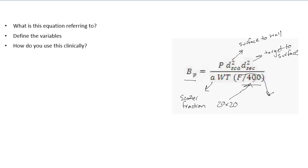That covers all the variables. In my experience with Part 3, they're not going to ask you to plug numbers into this equation and compute a result — especially given the time limits. They might pick out one or two variables to describe, but knowing what all the variables are and generally how the equation is used is what's important. Study to the depth you feel most comfortable with. There's just so much to study for Part 3 — be sure you have a good broad knowledge and clinical understanding of it.